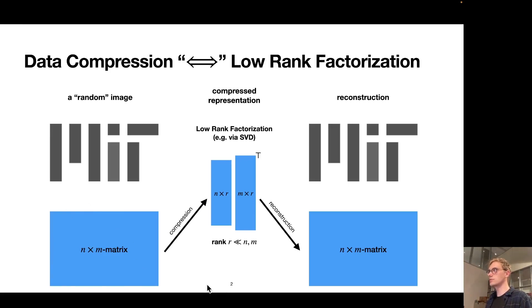In order to compress this image, we can attempt to find, for example, such two tall and skinny matrices here that when we multiply them together return the original matrix. This is what one would refer to as a low rank factorization. In this case, the rank is R, and this can for example be identified using the SVD among many other techniques.